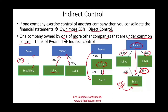We could have other sources of control, but the key point is you must consolidate when you have control. You do not consolidate if the subsidiary is in bankruptcy, because the owners don't have control — the court assigns a judge or trustee to run the company. You also don't consolidate if the subsidiary operates under the control of a foreign country — for example, if that country prevents cash from leaving, then you cannot consolidate.